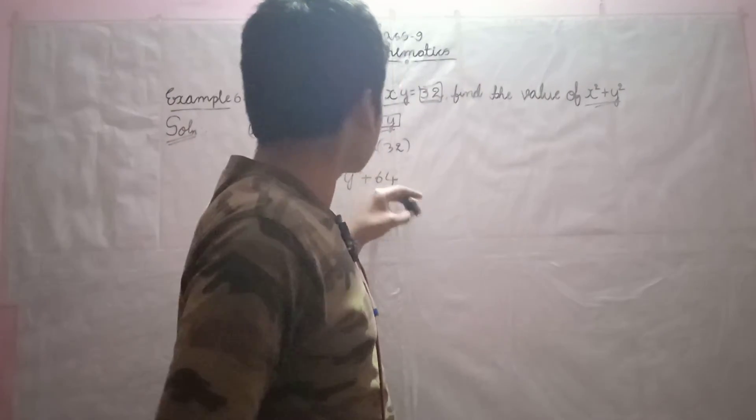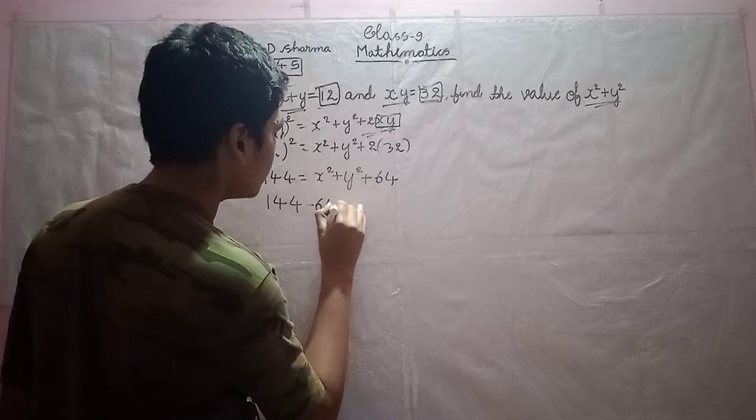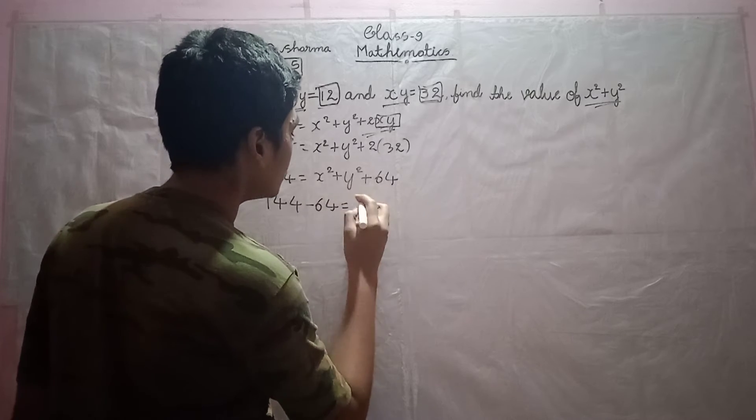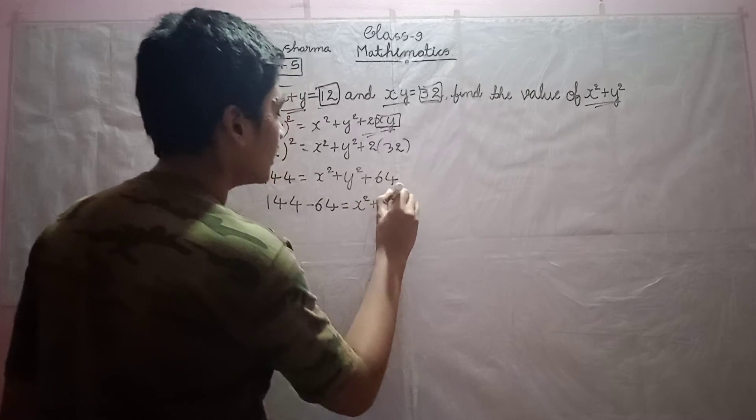Transpose this 64 to the left-hand side, that is LHS. You will get minus 64 will be equal to x square plus y square.